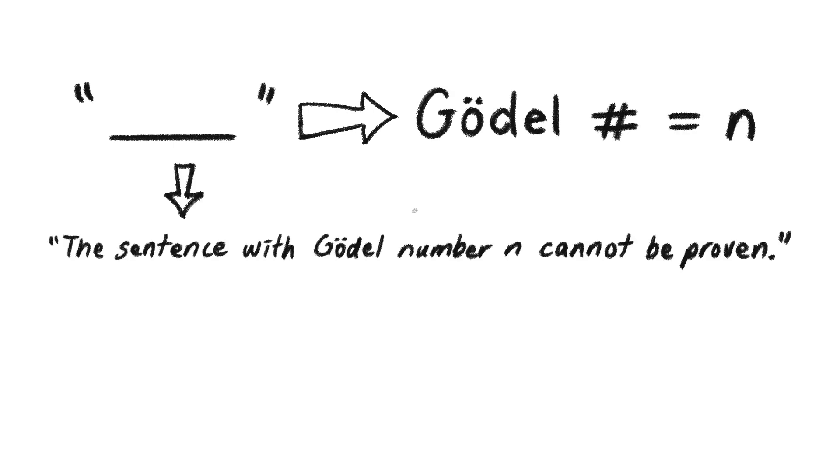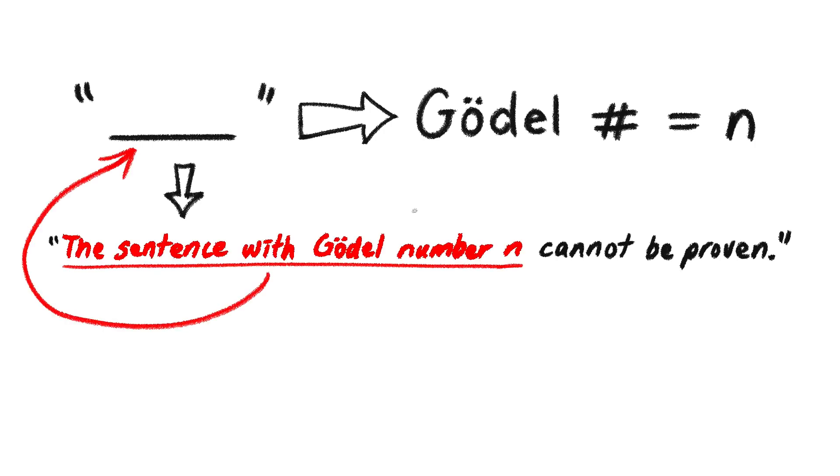Now here's the ingenious part. Gödel wrote a sentence that referred to its own number. The sentence has Gödel number n, and it says, the sentence with Gödel number n cannot be proven. Since it's referring to itself, the sentence is really saying, this sentence cannot be proven.